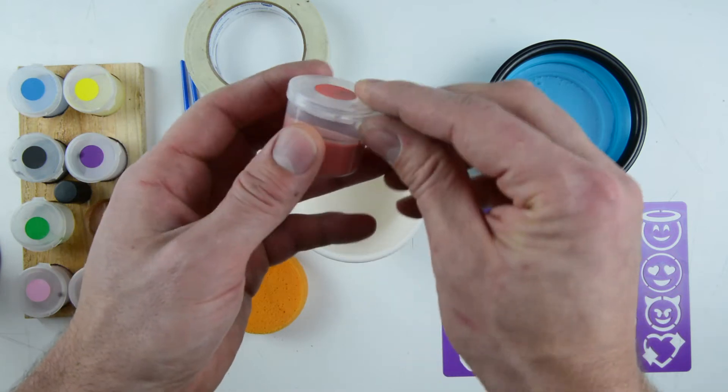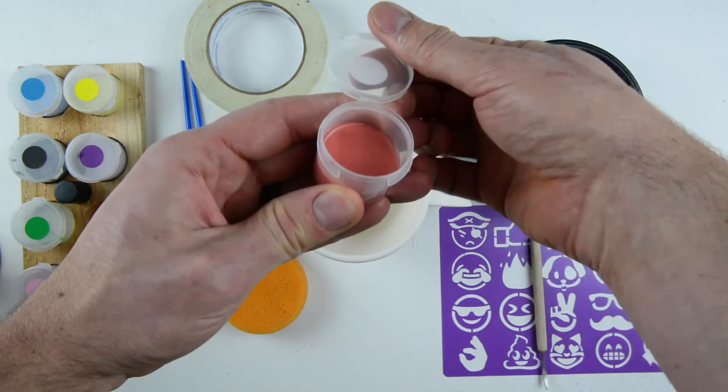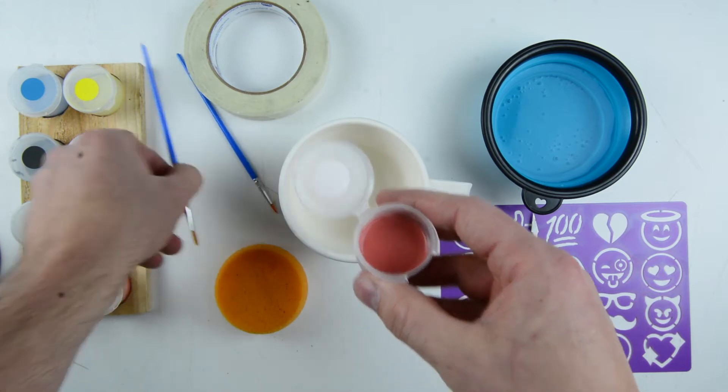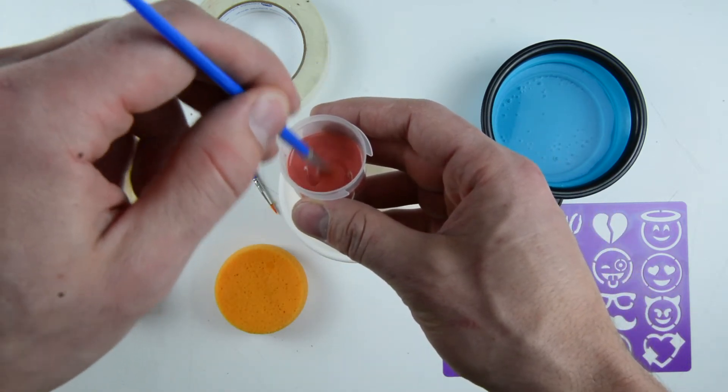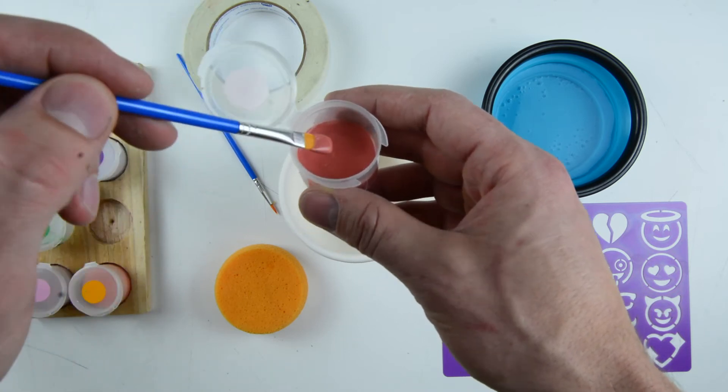The paint cups have a flip top lid which you can open by pulling from the front of the cup. To paint, first mix the paint briefly, then push excess paint off using the side of the container.